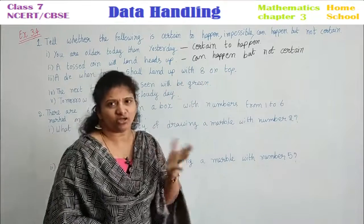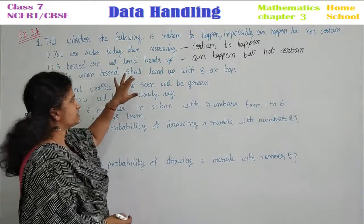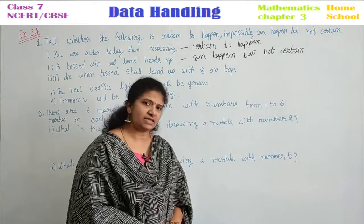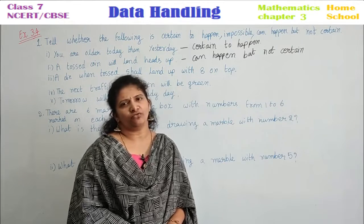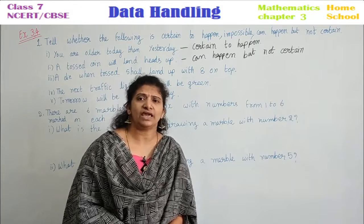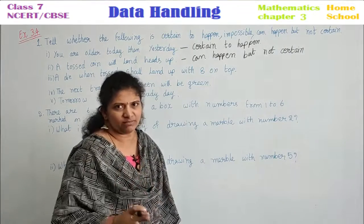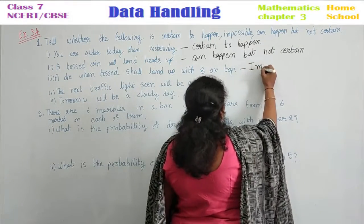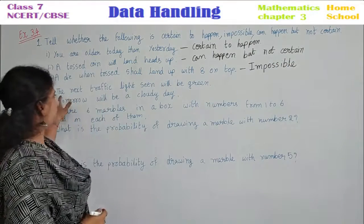Third one: A die when tossed shall land up with eight on top. Do you know a die? How many faces does it have? Six faces. What are the numbers? One, two, three, four, five, six. Do you see anywhere an eight? No — we cannot see any eight on a die. So what can you say? This event is impossible. Eight never comes when you throw a die — write this as an impossible event.